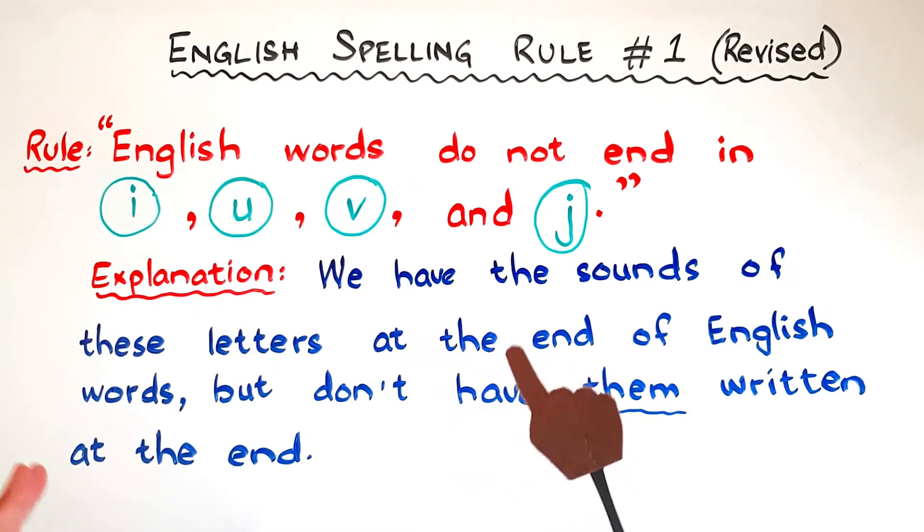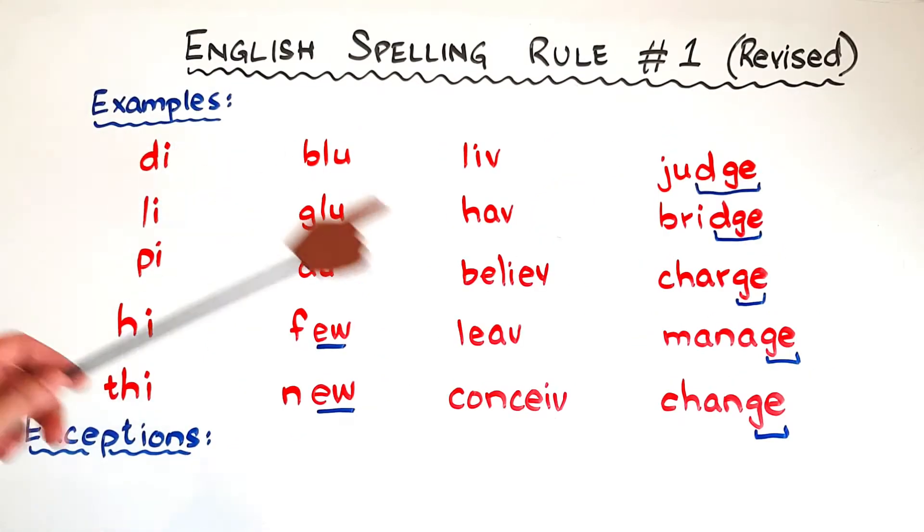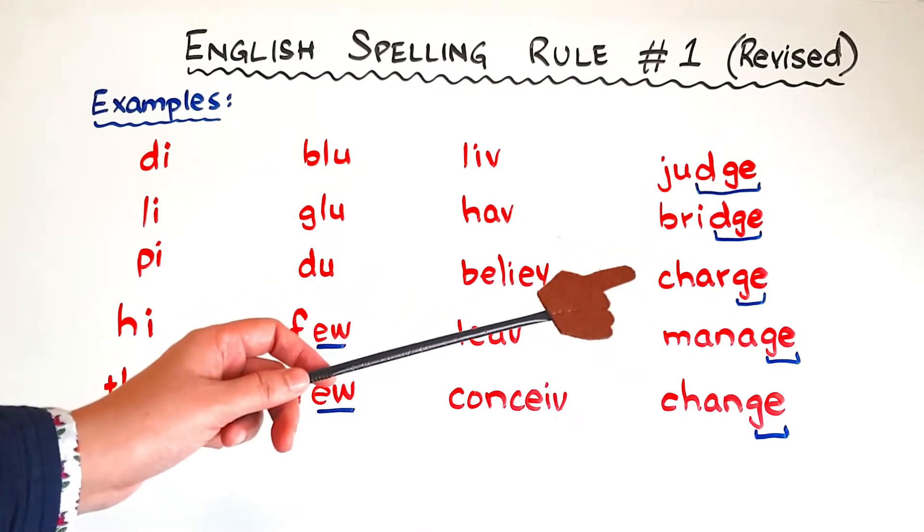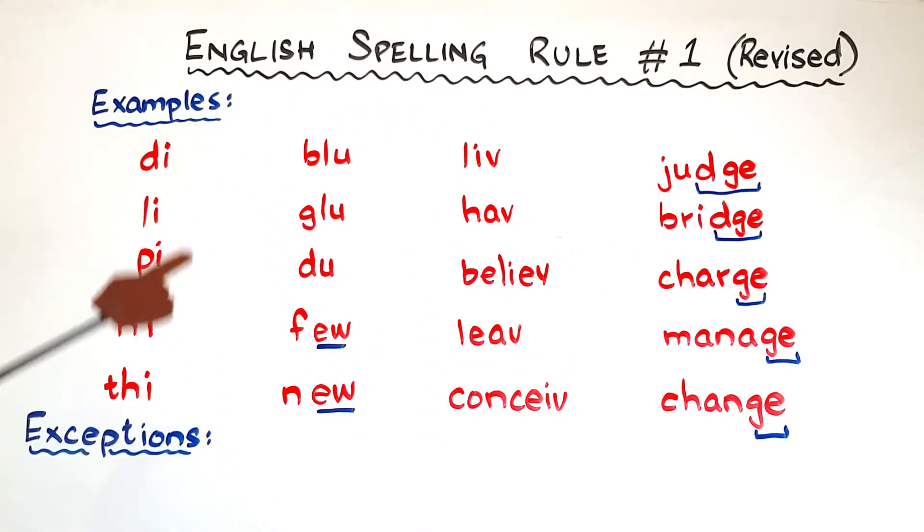Let's see some examples in which you will get a better idea of what I'm saying. You can have a screenshot of this so you can save it and copy it down later. Let's move forward. So here are a few examples in which you have I, U, V, and J sounds at the end of English words. But let's see that how we are going to write these words.